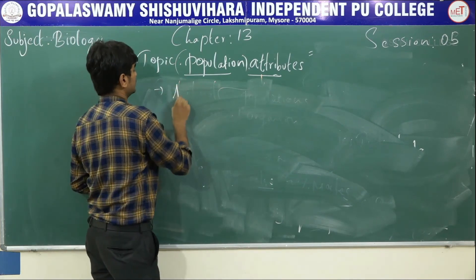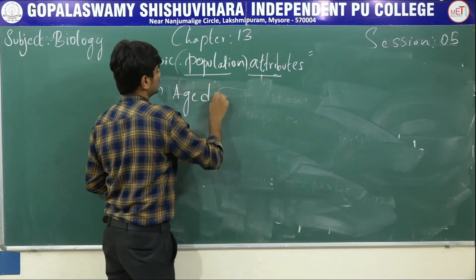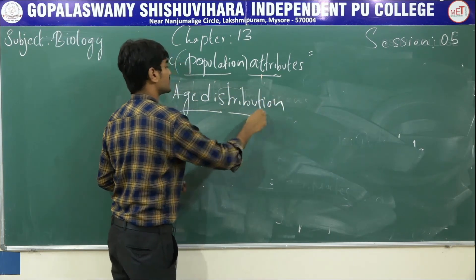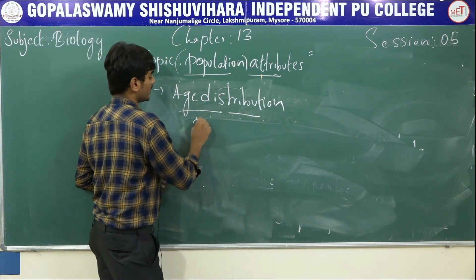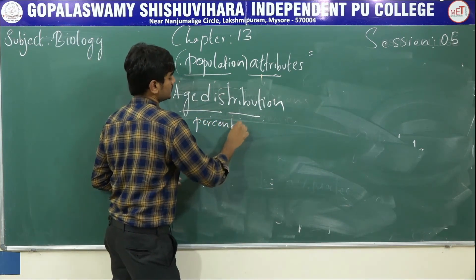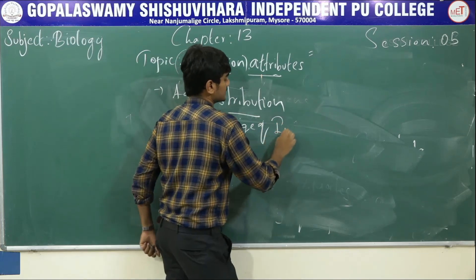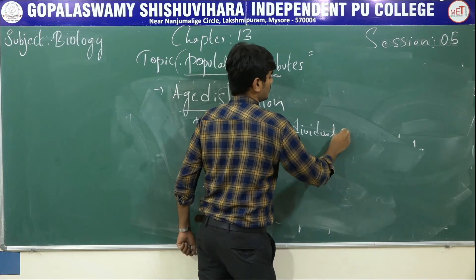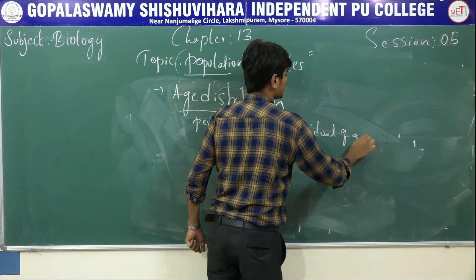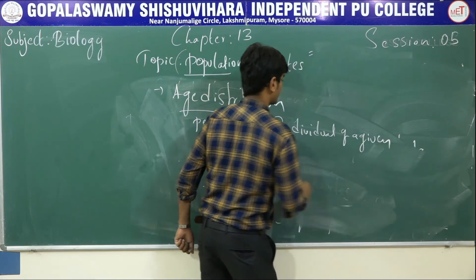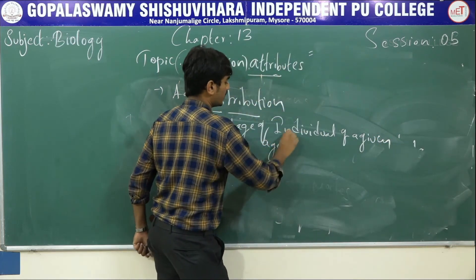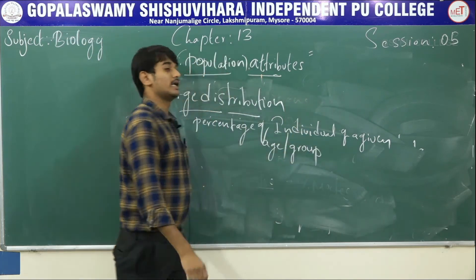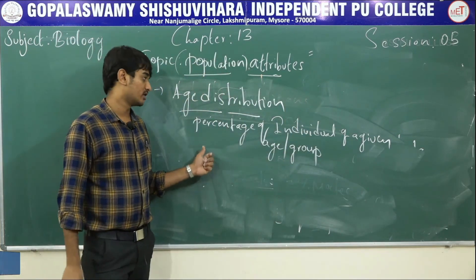Age distribution means the percentage of individuals of a given age group in a population at any given time.